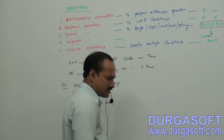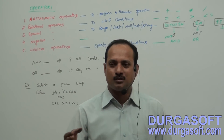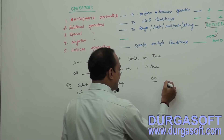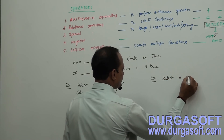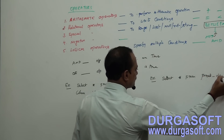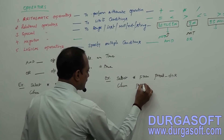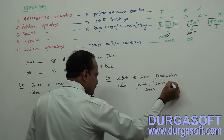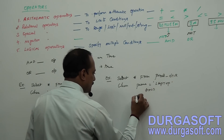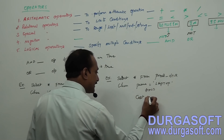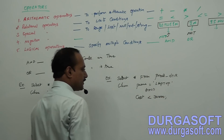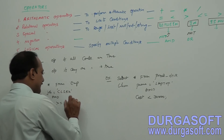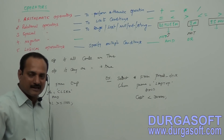Next example: Get laptop details having cost below 30,000. You are checking product name and cost. SELECT * FROM product_details WHERE product_name = 'Laptop' AND cost < 30000. The record should contain product name 'Laptop' and the cost below 30,000. Then only display the details; otherwise don't. Here you are specifying multiple conditions, and AND operator requires every condition to be satisfied and return true.